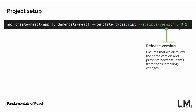The last part — the scripts version — ensures we all follow the same version and prevents newer students from facing breaking changes. After the publication of the course, React and Create React App continue their development and release new versions, so without specifying the scripts version it would use the latest, which may have breaking changes. For us to make sure we're all on the same page, we use version 5.0.1.